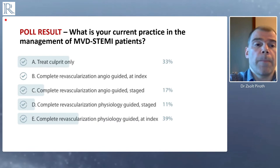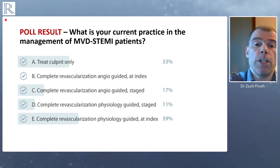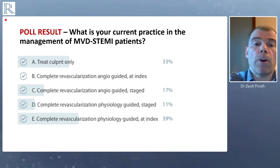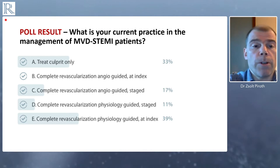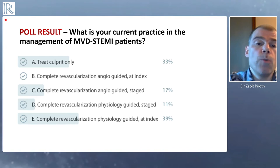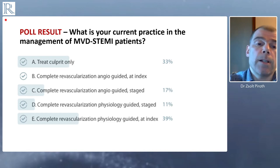Now let's look at the poll results. 39% of colleagues answered E — complete revascularization guided by physiology during the index procedure, during primary PCI — the COMPARE-ACUTE approach, a physiology-guided but aggressive multivessel PCI approach. The second most prevalent answer was A — treat culprit only — a third of colleagues. 17% answered complete revascularization by angio guidance in a staged manner, and 11% do staged physiology-guided complete revascularization. In all, two-thirds of colleagues perform complete revascularization, and the majority use physiology during the index procedure.